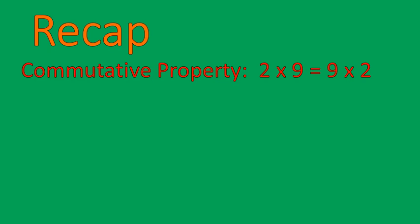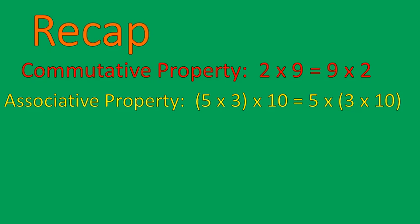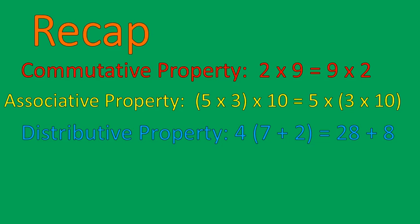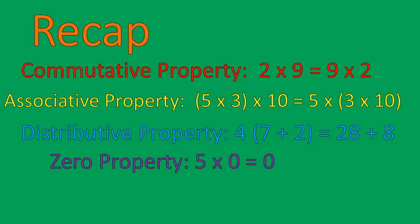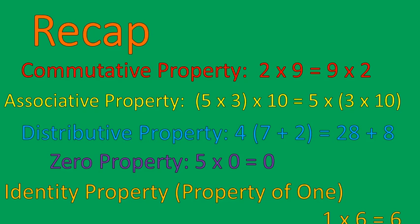Quick recap: we've talked about the commutative property — that's when numbers move back and forth. The associative property — that's where you can move the parentheses, but the numbers stay where they are. The distributive property is when you take what's outside the parentheses and multiply it times what's inside the parentheses, so four times seven gives you twenty-eight and four times two gives you eight. The zero property is anything times zero equals zero — pretty easy to remember. And the identity property, or the property of one, is when you have one times a number giving you that original number — one times six is equal to six.